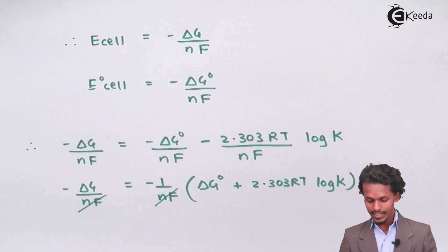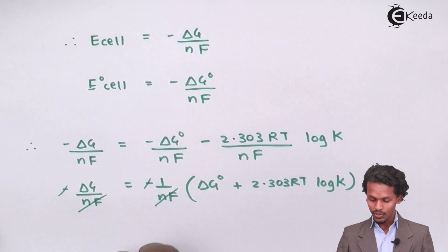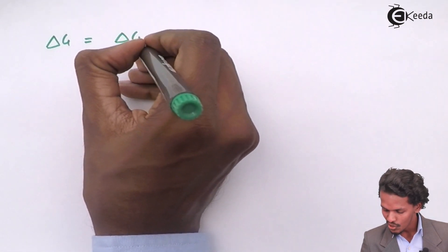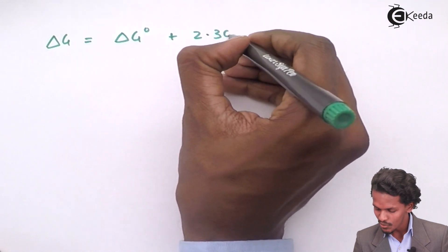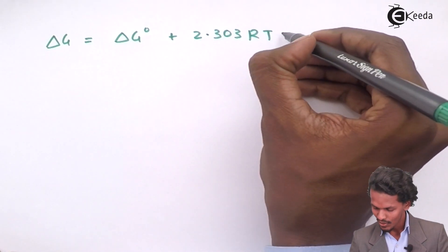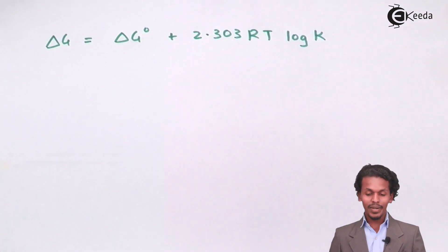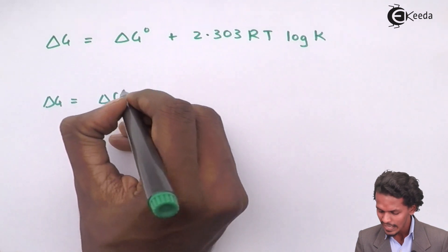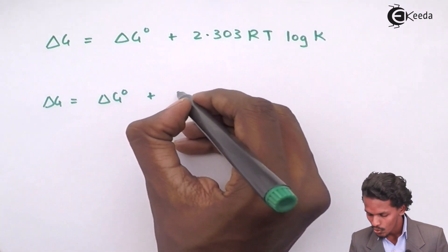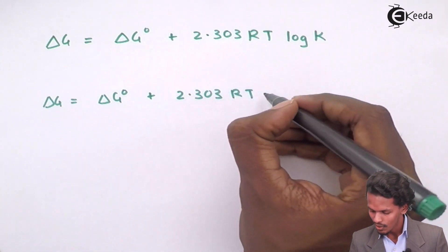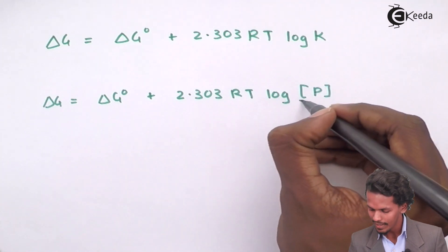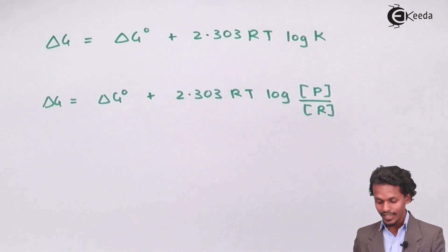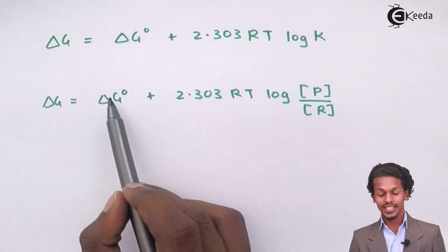After cancellation of the minus and NF terms from both sides, what remains is: delta G equals delta G naught plus 2.303 RT log base 10 of K. This is the relation between the Gibbs free energy change and the standard Gibbs free energy change.